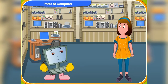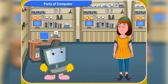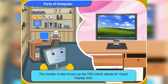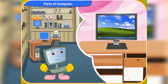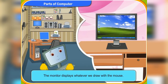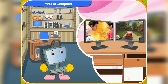I think you need to refresh your memory. Let me tell you what the main parts of the computers are used for. Let's start with the monitor. The monitor is also known as the VDU, which stands for Visual Display Unit. It looks like a television. The monitor displays whatever we type with the keyboard, and also displays whatever we draw with the mouse. You can also watch movies or play games on the monitor.